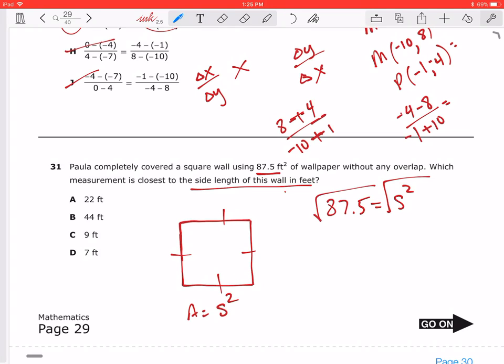Well, we can square the value of each side. So then S is going to be equal to the square root of 87.5, which S is approximately 9.3.